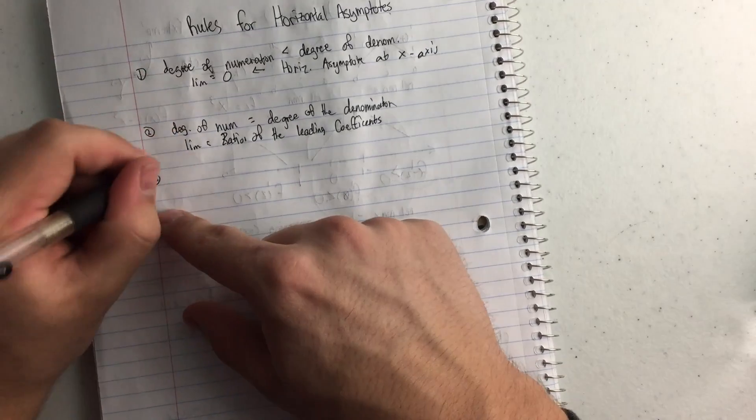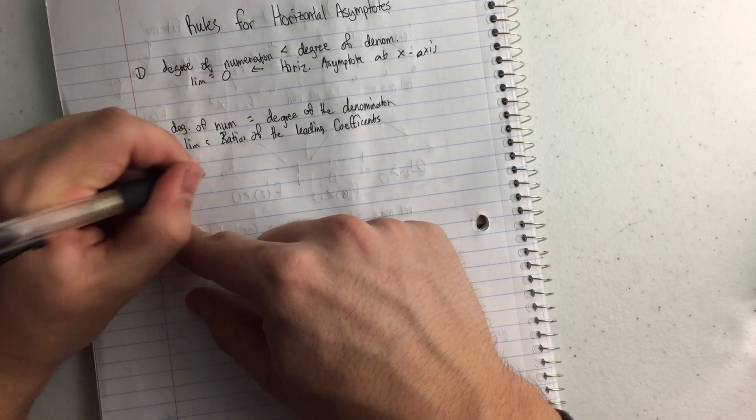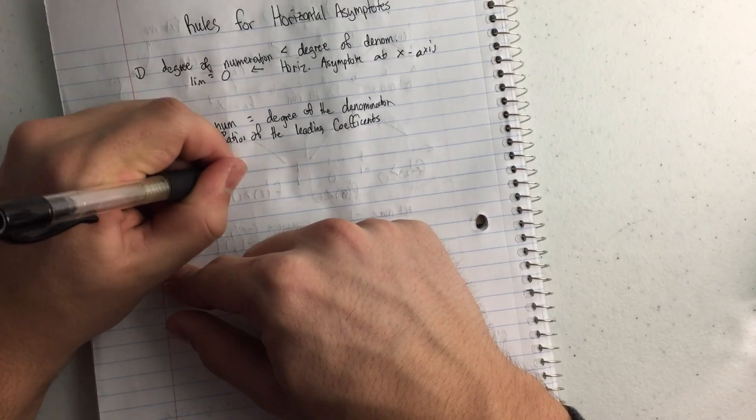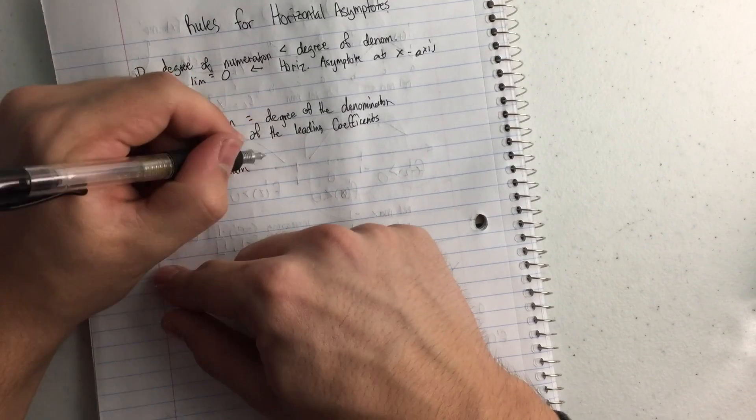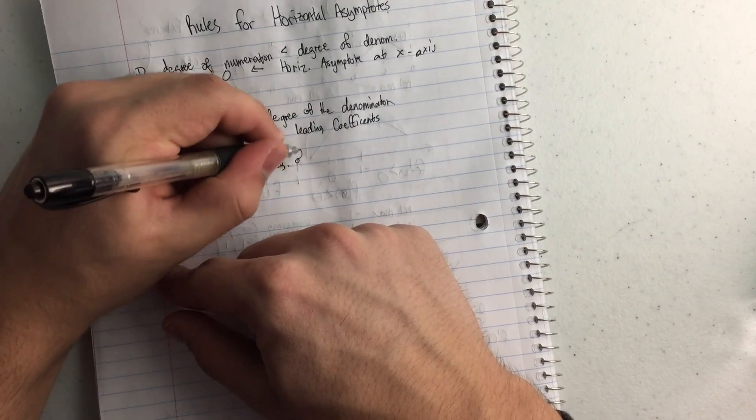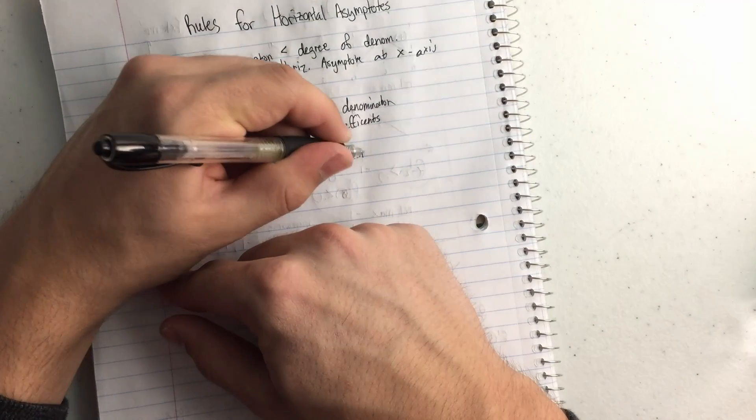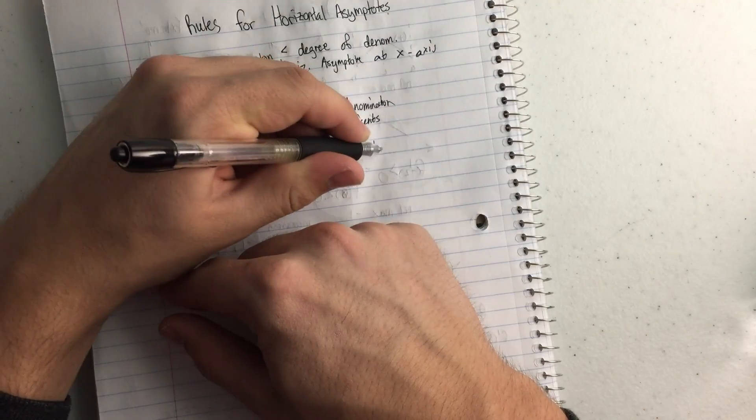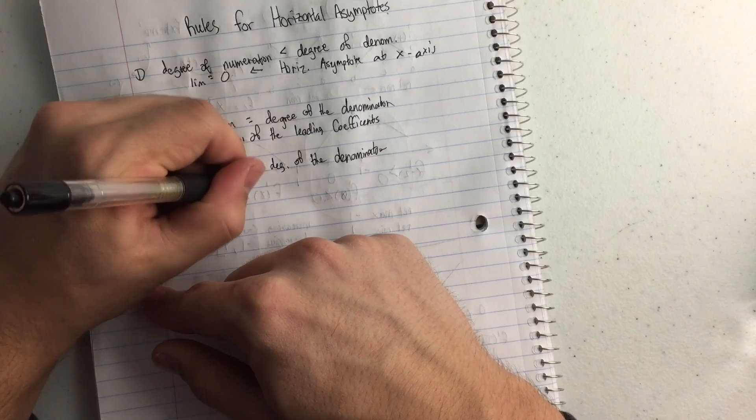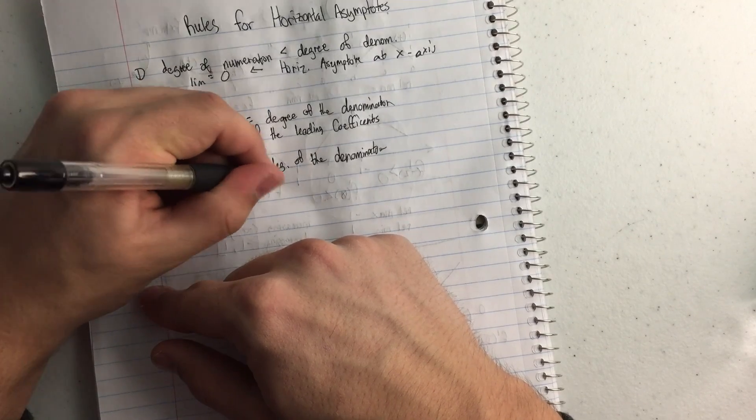And then third rule, the degree of the numerator is greater than the degree of the denominator. And then the limit does not exist.